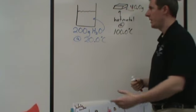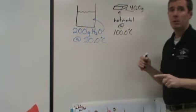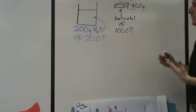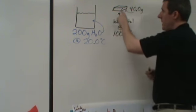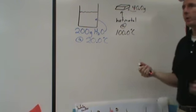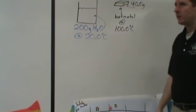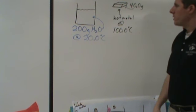A shortcut to saying that would be to say that energy is going to get transferred from the metal to the water. And because energy is a nice shortcut, it turns out that the amount of energy that goes from the metal into the water will be equal for both. So the amount of energy this loses will be gained by the water. We're assuming this is an insulated system and I want to do a calculation.